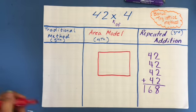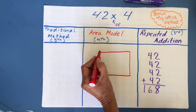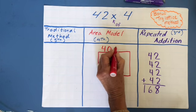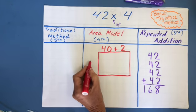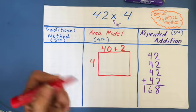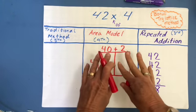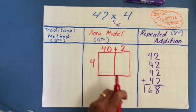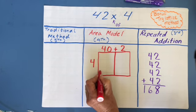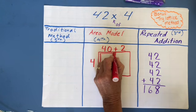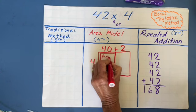This is a fourth grade method — the area model. What we're going to do is take 42 and write it in expanded form. I know 42 in expanded form is 40 plus 2. And I'm going to write 4 in expanded form, which is just 4. Wherever I see a plus sign, I make a line, so now I have two boxes. This length here is equal to 4 and this length here is equal to 40.